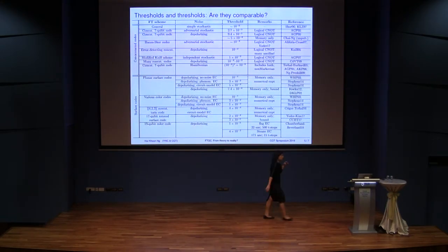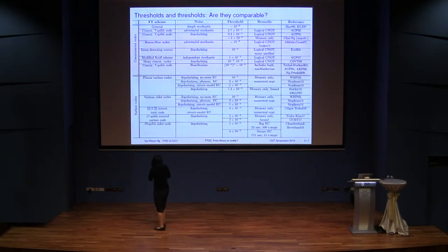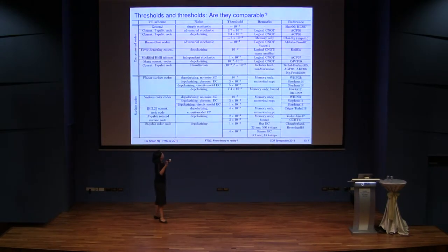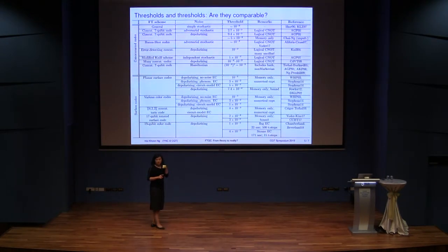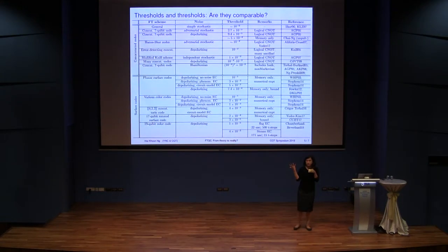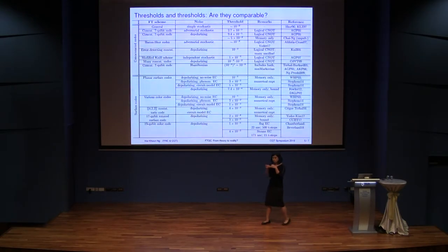Looking at the noise models: all the surface code entries say depolarizing noise, which is considered the mildest form of noise. In the top half for concatenated codes, there are depolarizing noise entries but also adversarial noise, which is essentially the nastiest kind of noise you can imagine. So the kind of noise models being discussed are rather different between the two categories. Also, if you just look at the threshold numbers, concatenated codes are typically 10⁻⁴, while surface codes are at 10⁻³ or better — giving the first impression that surface codes have less demanding thresholds.